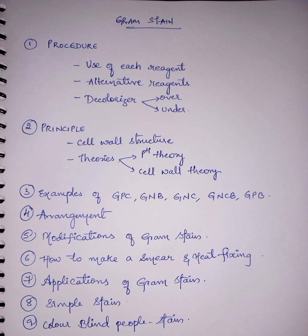Third question: you have to know examples of gram negative bacteria — that is gram negative bacilli, gram negative cocci, gram positive cocci, and so on. At least two examples for each type is fine.